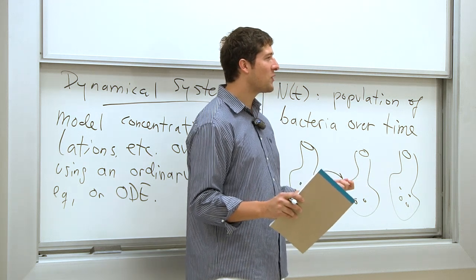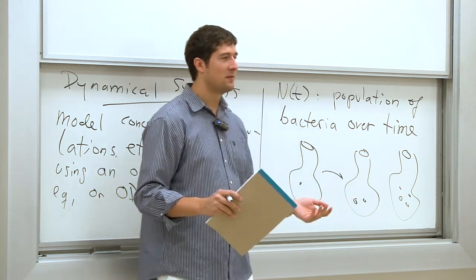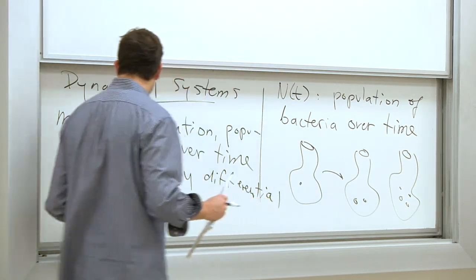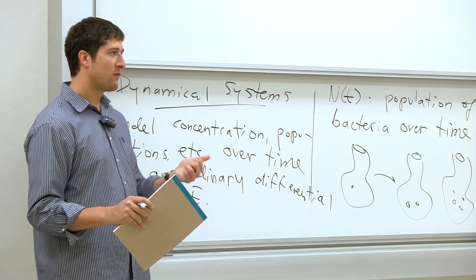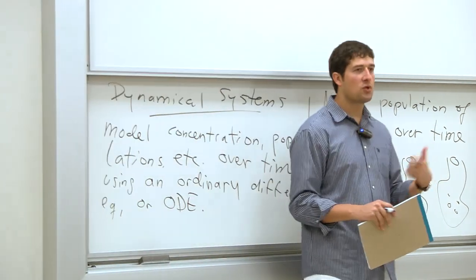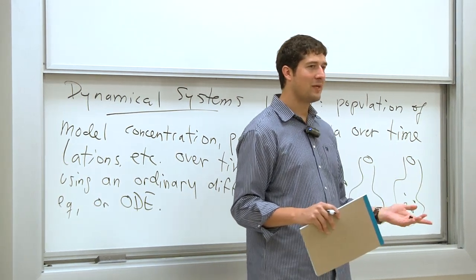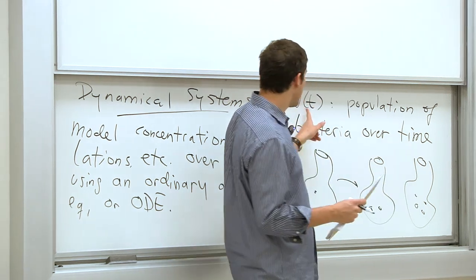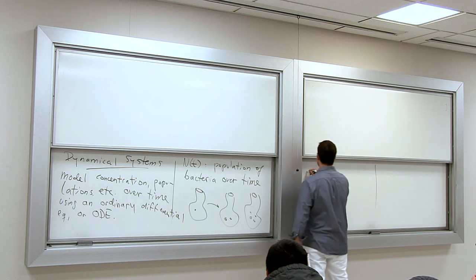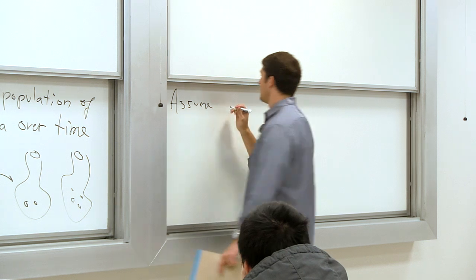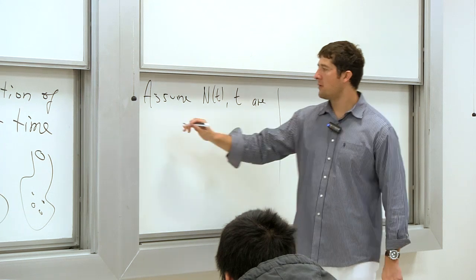Why do we assume bacteria count is continuous? First, because we cannot write a differential equation otherwise — differential equations involve continuous variables. Second, the number of bacteria is usually so high, a million or more, that it doesn't really matter. So we assume that both N and time are real numbers.